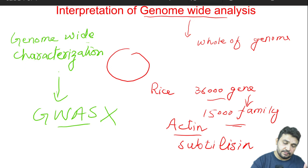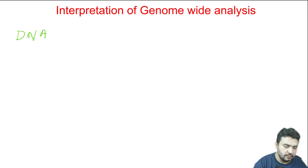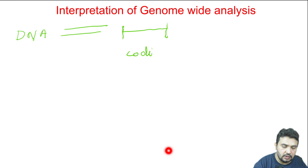Now let's try to understand how it works. Let's begin with DNA. We know that DNA is actually double-stranded. DNA is essentially the gene. In one gene there is one coding part and one non-coding part.